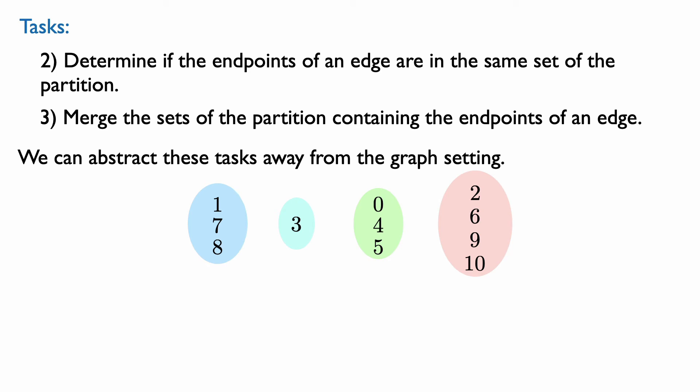Now we're left with tasks two and three, which we'll consider together. These tasks don't actually have much to do with graphs, so we're going to abstract them out. We have some sets of numbers — in our application, the numbers are the labels of the vertices, i.e., the numbers 0 through n minus 1. We have sets that partition the numbers 0 through n minus 1. What operations do we want to support on these sets in order to do tasks two and three?